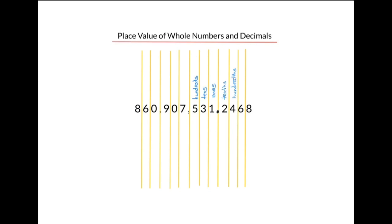Note that words ending in 's' represent positions to the left of the decimal place, and words ending in 'ths' represent positions to the right of the decimal place. So what we end up with is corresponding pairs on either side of the decimal — for example, the tens match with the tenths, and the hundreds with the hundredths.